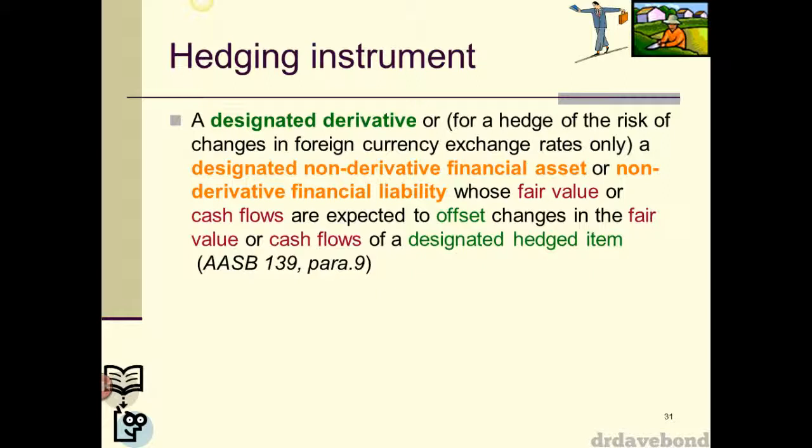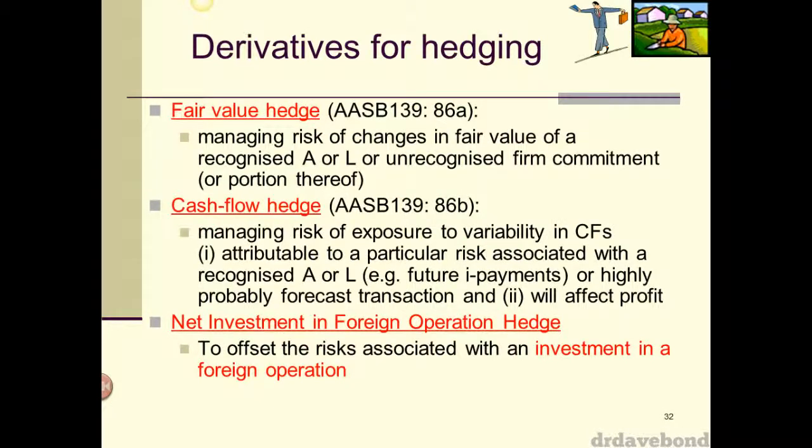If we have a situation where we owe US dollars and the Aussie dollar drops — say we owe $100,000 US — we're going to have to pay more Australian dollars to pay off that debt. So we take out a position in a derivative where, as the Aussie dollar drops against the US, we get a gain on the hedge. Those two should hopefully net out.